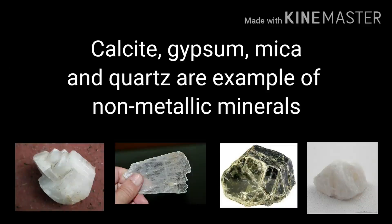Minerals from which we do not get metals are called non-metallic minerals. Calcite, gypsum, mica and quartz are examples of non-metallic minerals.